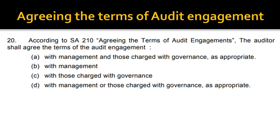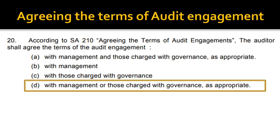The last question: according to SA 210 — Agreeing the Terms of Audit Engagement — the auditor shall agree the terms of the audit engagement with whom? With management or those charged with governance (TCWG). It is not mandatory to go only to management; you reach out to either management or TCWG, whichever is appropriate. For example, for a listed entity, you need to reach out to the audit committee — those charged with governance — not just the CFO. Therefore, option D is the correct answer.